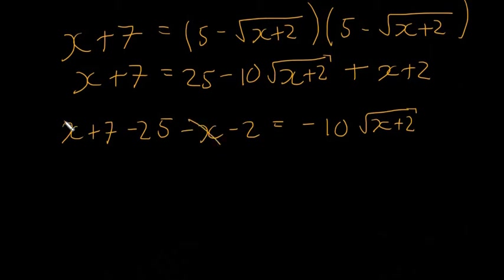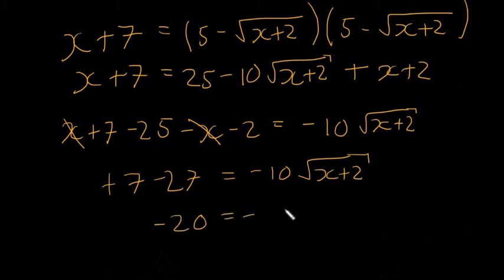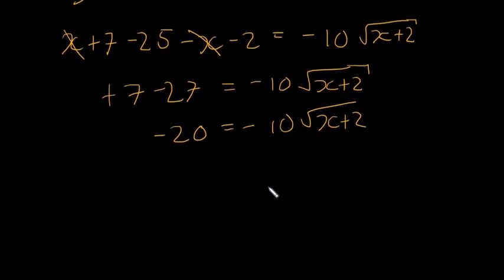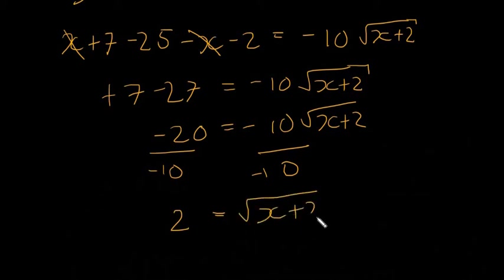So we'll just finish this. The x is actually going to cancel over here, and we're going to have seven, so plus seven minus 27 is equal to minus 10 the square root of x plus two. We're going to have minus 20 is equal to minus 10 square root of x plus two. So I'm actually going to divide both sides by minus 10. This is going to give us two on this side is equal to the square root of x plus two.